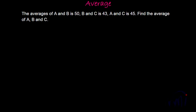The problem is the average of A and B is 50. That means A plus B by 2 is 50, or you can say A plus B is equal to 100 if I cross multiply.